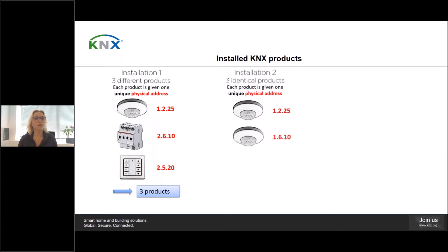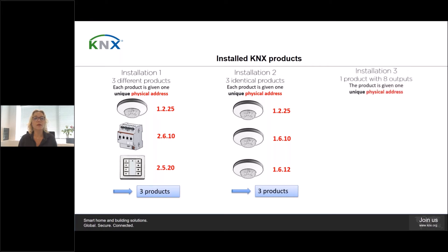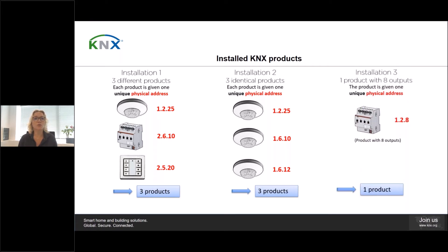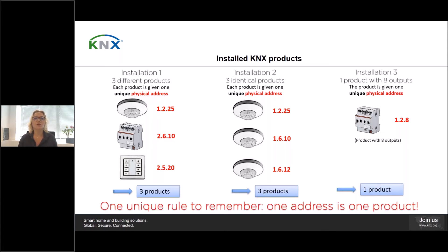In the second installation, we had three identical products from brand X. But also in this case, each product is given a different physical address, even if the product is the same. So this is also considered as being three products. In the third installation, we had one product with eight outputs. The product is given one unique physical address, even though it has eight outputs — so this is considered as being one product. There is only one unique rule to remember: one address is one product. It is not important what the product does; it's only important that it's one product and one address.